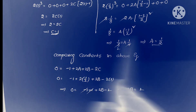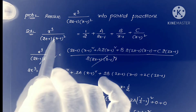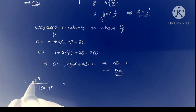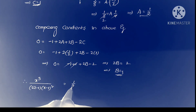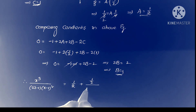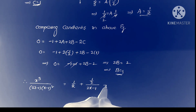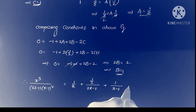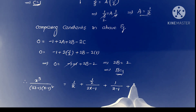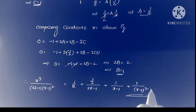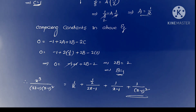Replacing all three values, the final answer is: x³ / [(2x-1)(x-1)²] = 1/2 + (1/2)/(2x-1) + 1/(x-1) + 1/(x-1)². That is the answer to the second problem.